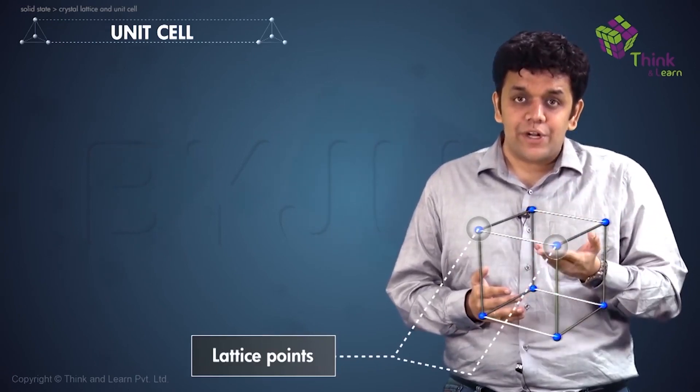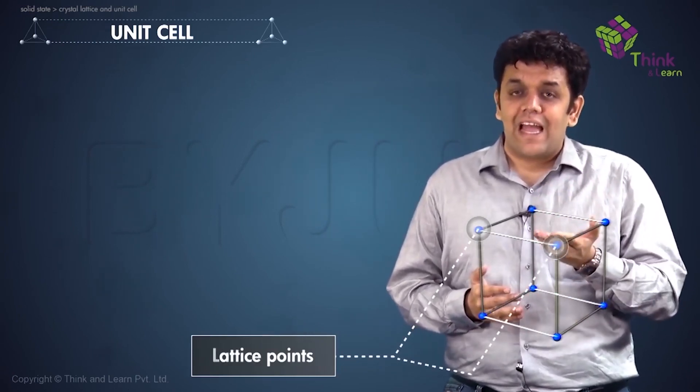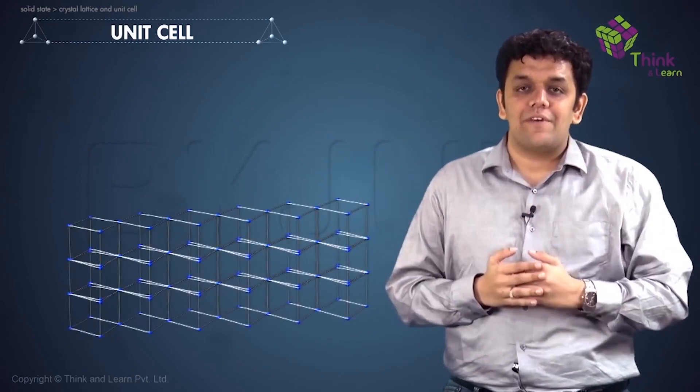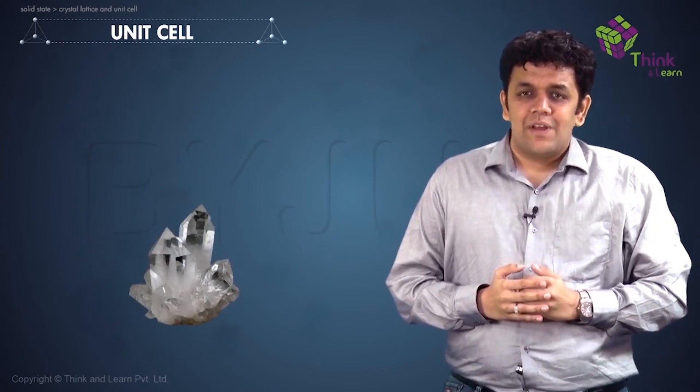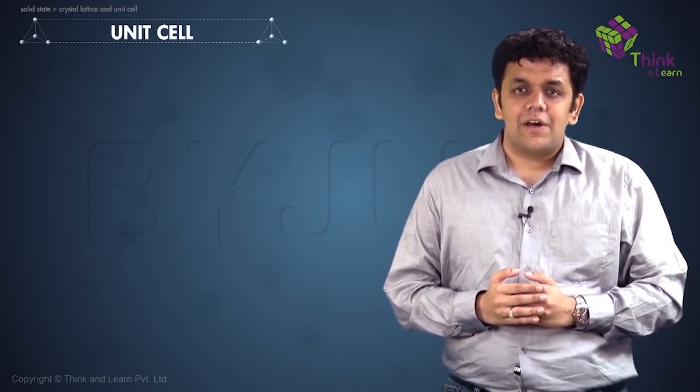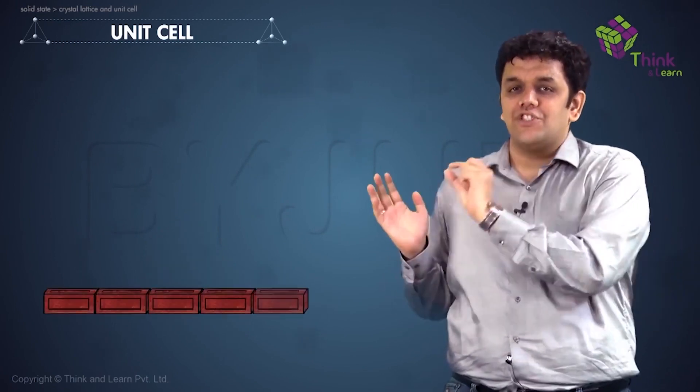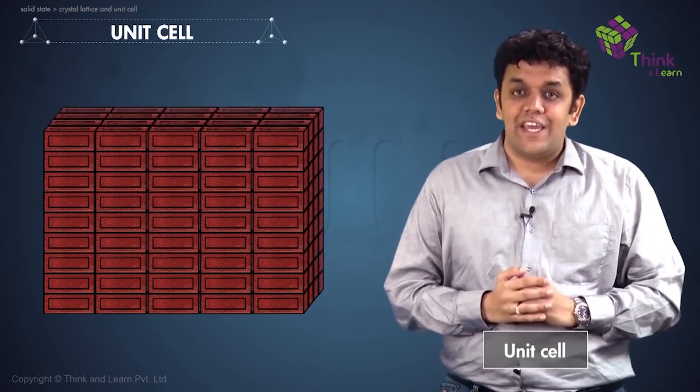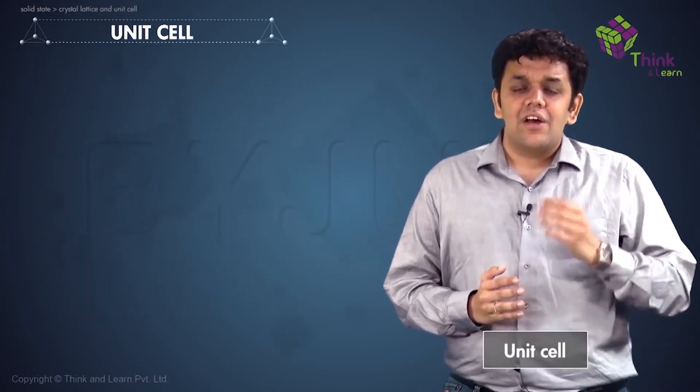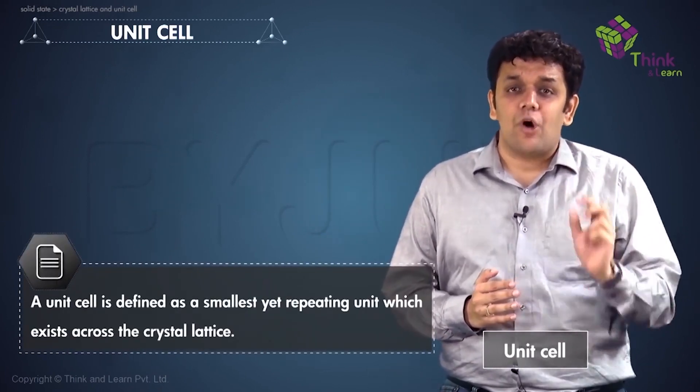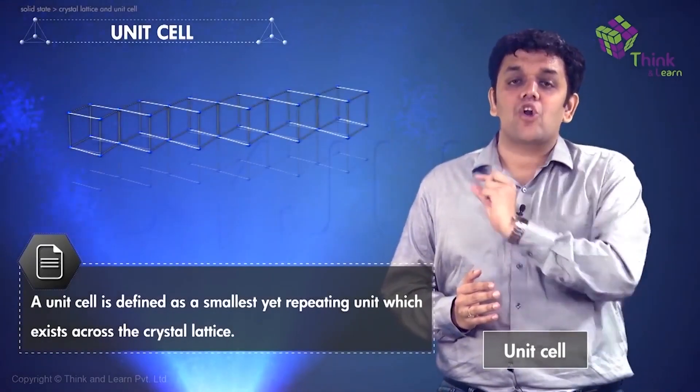Take this unit which is smallest yet repeating, and then reconstruct the entire structure as is given in the figure. Now what is the significance of this smallest yet repeating structure? It is like a building block of this structure, and this particular building block is called as the unit cell in solid state. So essentially, in solid state, a unit cell is defined as a smallest yet repeating unit which exists across the crystal lattice.